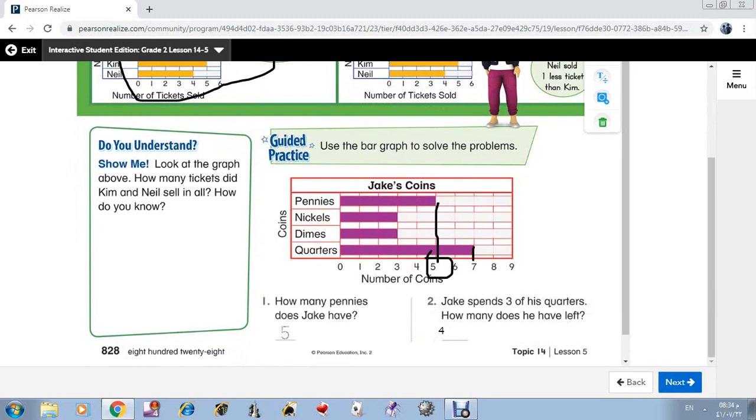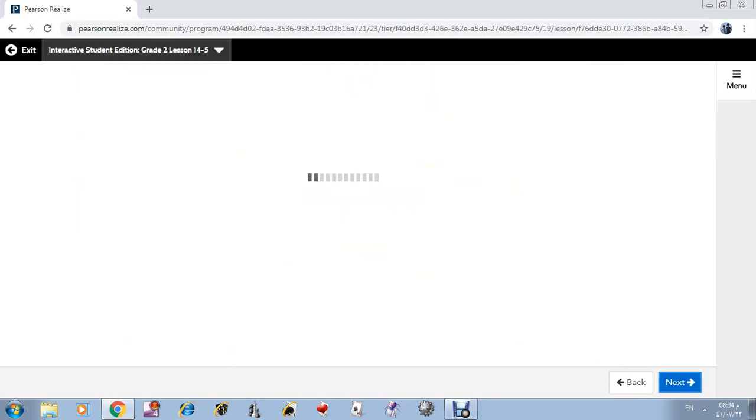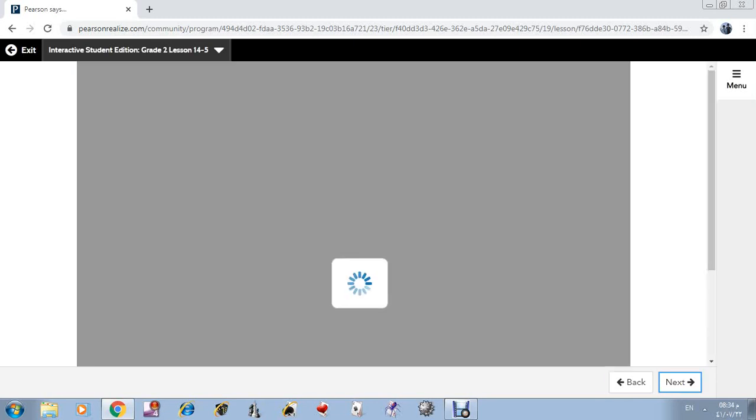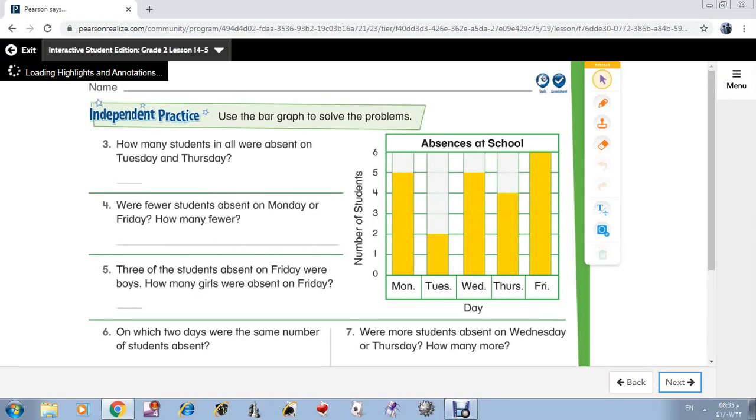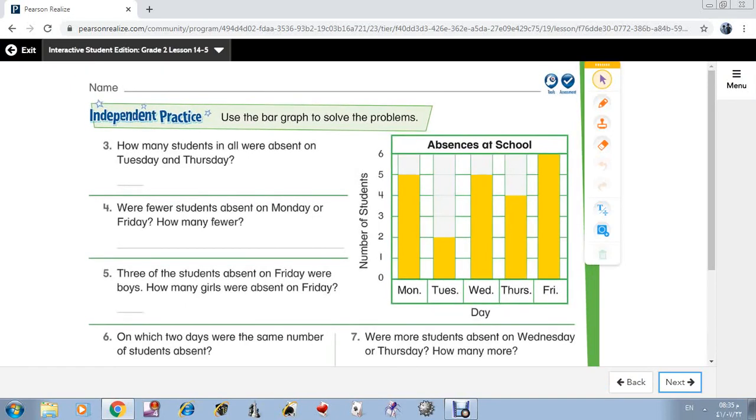Let's go to page 829. Here, how many students in all were absent on Tuesday and Thursday? Here, Tuesday, here, and Thursday, here. Yes, both of them, 2 and 4. So the answer? Yes, 6. Very good.